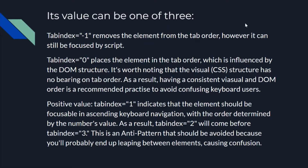The second type of value people usually give is tabIndex 1, 2, 3, and so on. This indicates the element should be focusable in ascending keyboard navigation order, determined by the number's value. So if you give tabIndex 1 it will be the first focus point, then 2, then 3, and the focus shifts to different components according to their tabIndex.